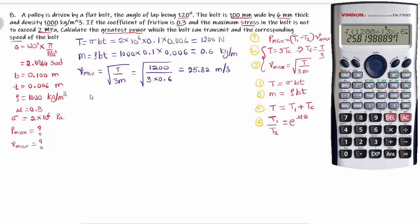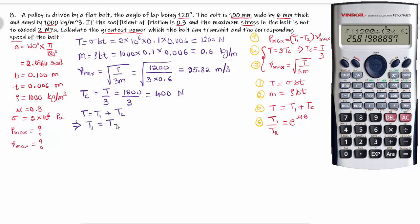Step 4: Centrifugal tension Tc is equal to capital T divided by 3 — that is 1200 divided by 3 — giving 400 newtons. Step 5: T is equal to T1 plus Tc, so T1 equals T minus Tc. Substituting: T1 equals 1200 minus 400, giving T1 equal to 800 newtons.